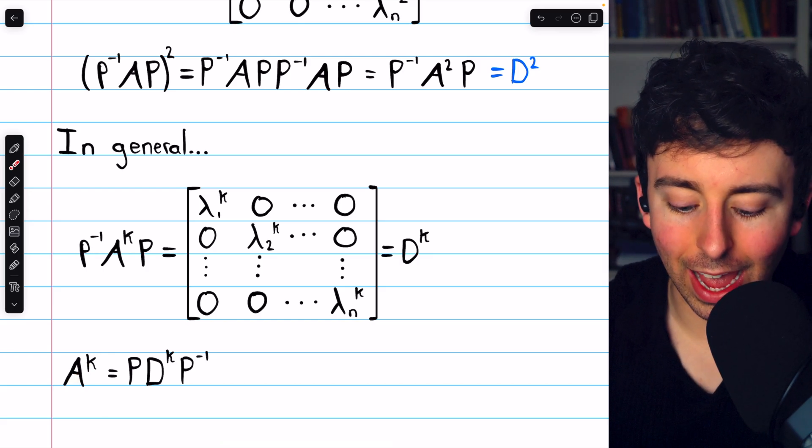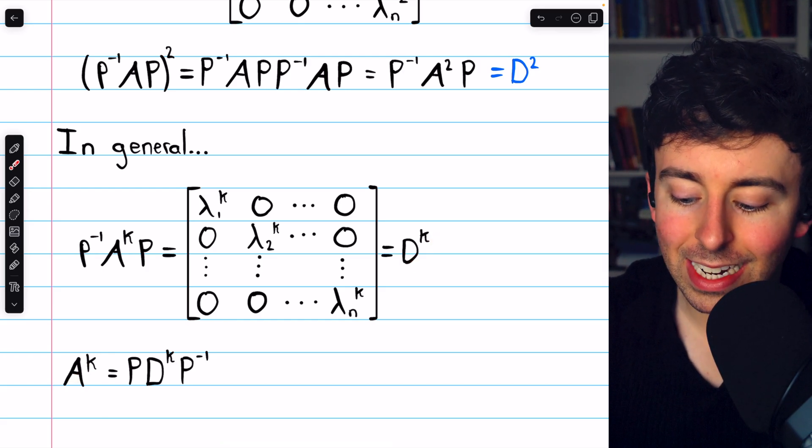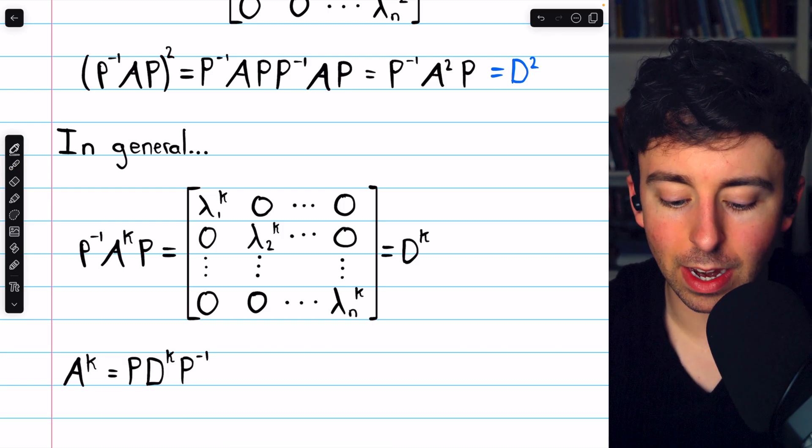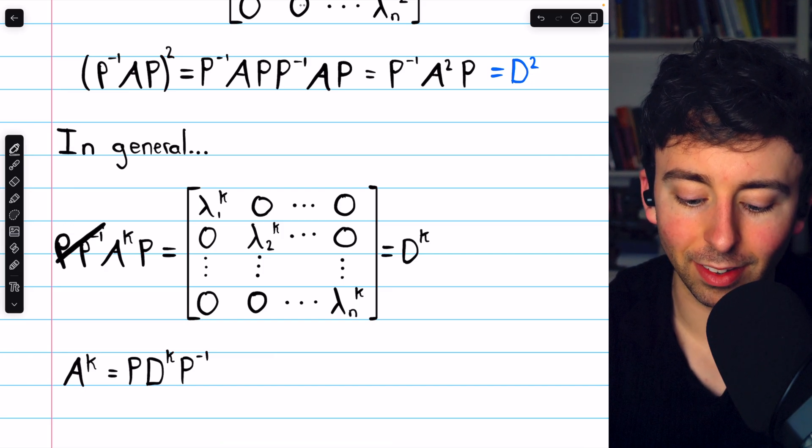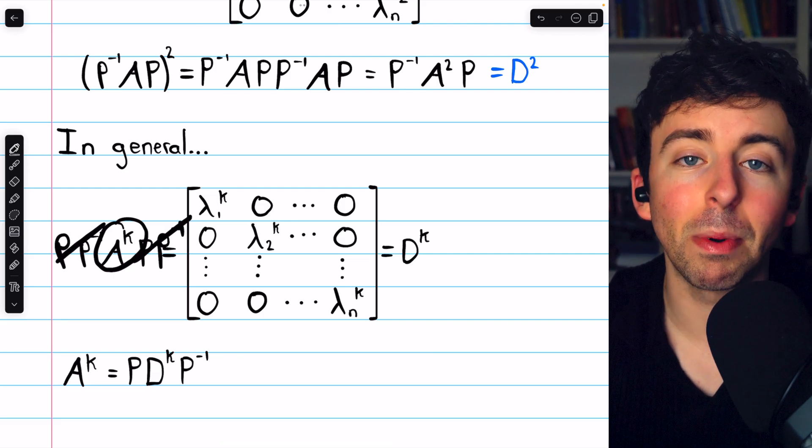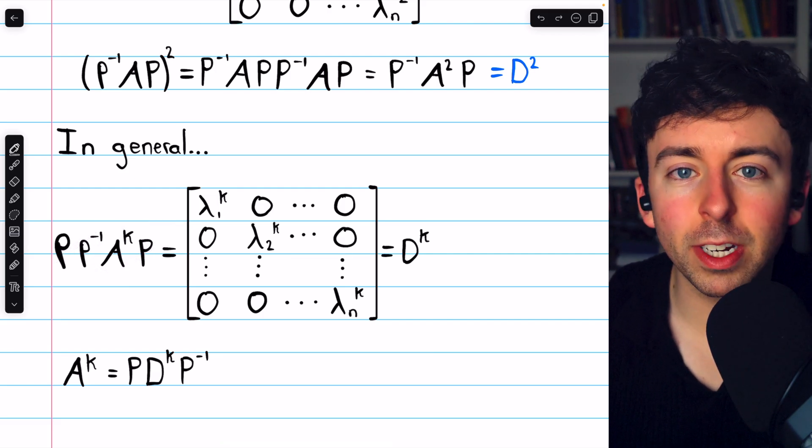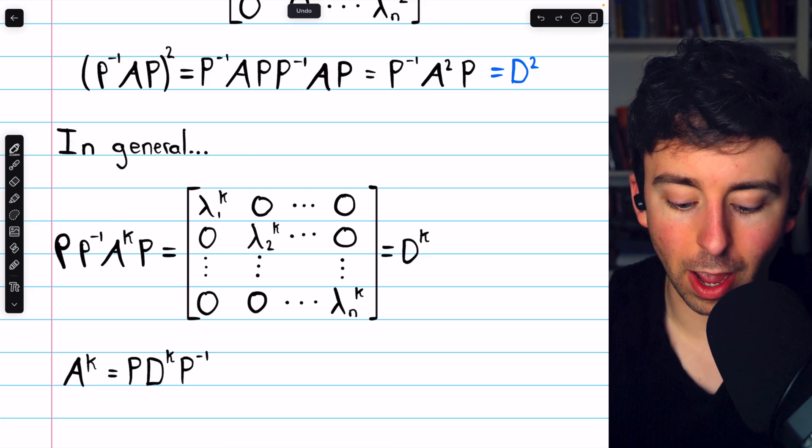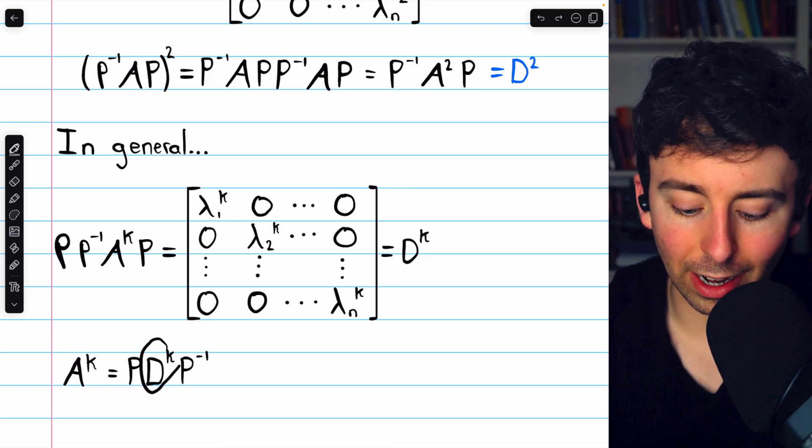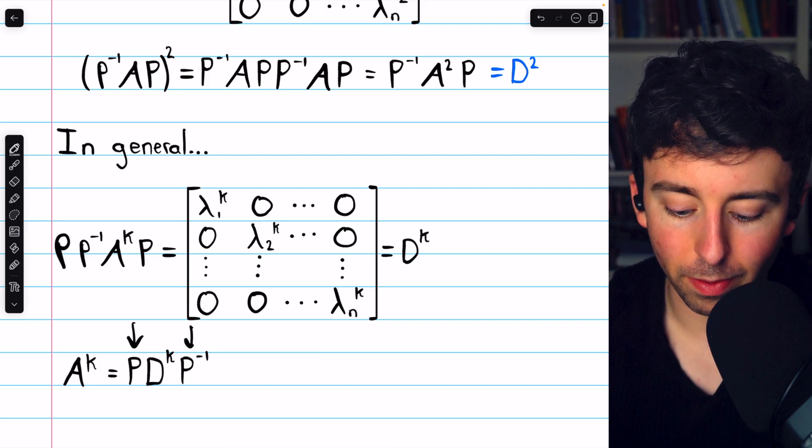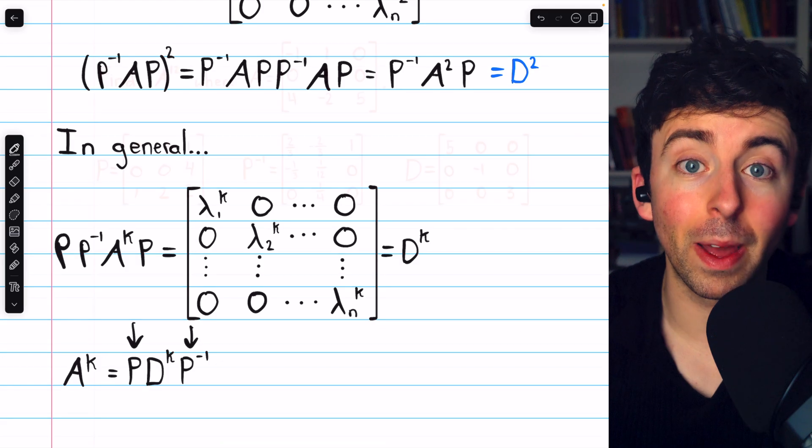Hence, we can compute A to the K by multiplying D to the K on the left by P and on the right by P inverse, because multiplying on the left by P cancels that out, multiply on the right by P inverse cancels that out. So we would just solve for A to the K by doing that. So A could be a pretty ugly matrix, and this turns multiplying it by itself a bunch of times into just exponentiating the eigenvalues in that diagonal matrix, and then a couple quick matrix multiplications. Much better.